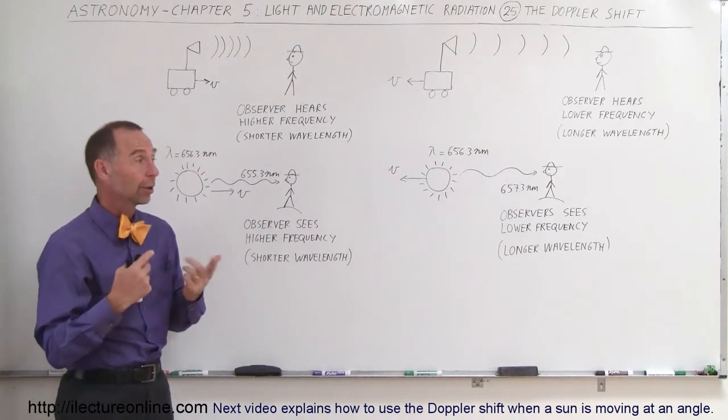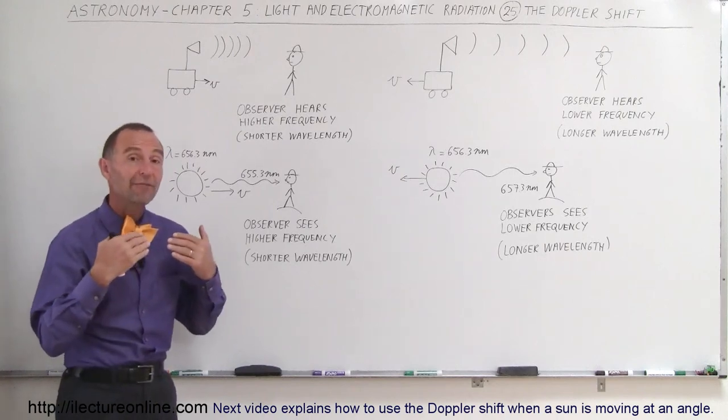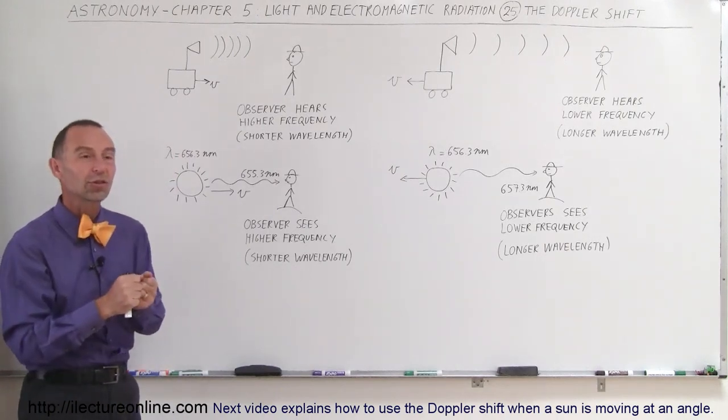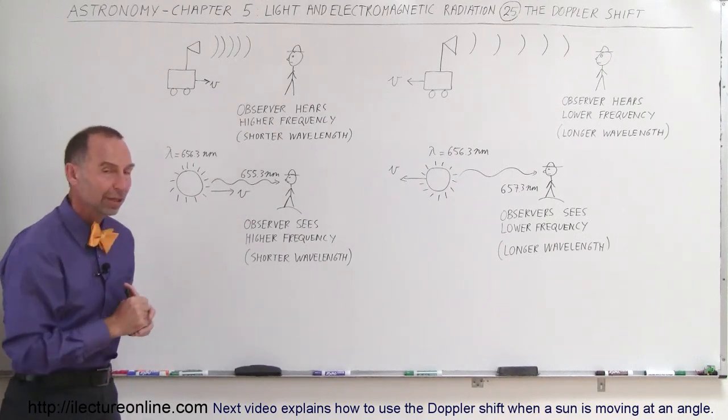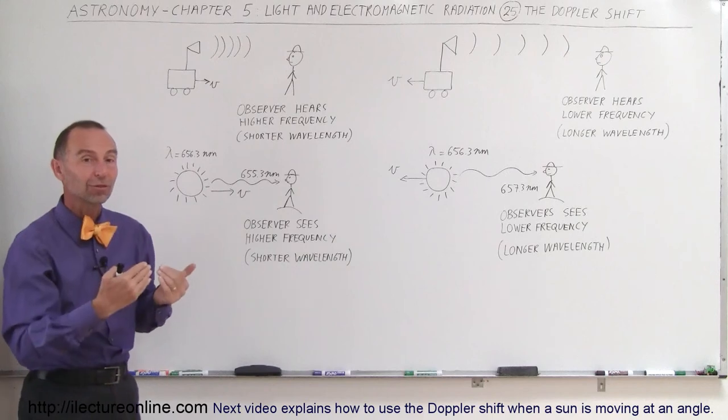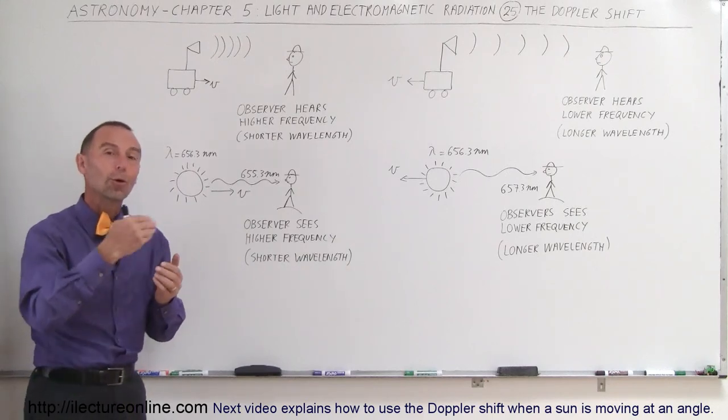So, we can determine if it's moving, we can determine if it's moving towards us or away from us, and we can determine how fast it's moving towards us or away from us. A tremendous tool in astronomy by discovering this particular fact that, yes, light, just like sound, experiences the Doppler shift if the source of that light is moving either towards us or away from us.